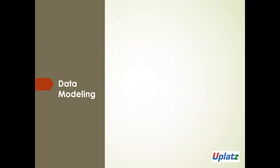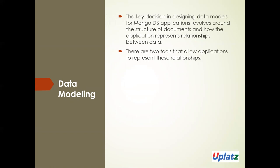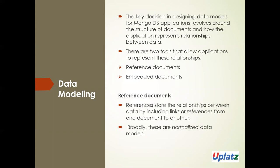The next topic is data modeling. What is data modeling and why do we use it? The key decision in MongoDB is all about the structure of a document and the relationship between data. We have two approaches to represent relationships: one is reference, and the other is embedded documents. Reference involves storing a relationship by including a reference from one document to another — this is called normalized data.